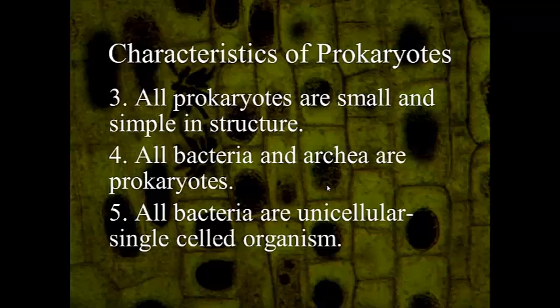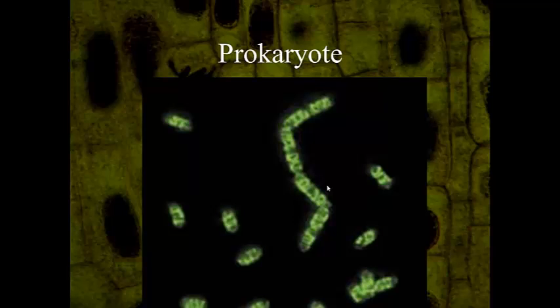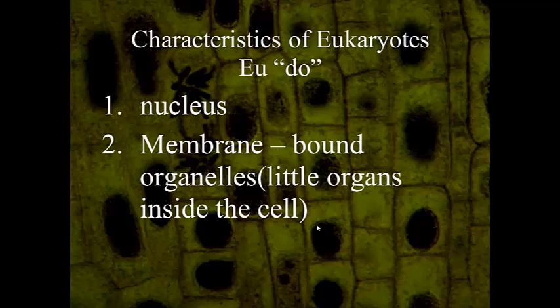Some more characteristics of prokaryotic cells: they're small and simple. They are bacteria and archaea bacteria. Bacteria are unicellular — single-cell organisms — so an entire bacterial body is made up of one cell. This picture shows a bacterial colony where one individual bacterium joins with others to make a colony, but they are still only one organism each.